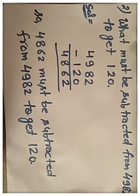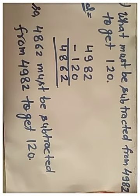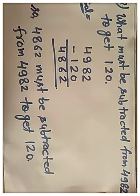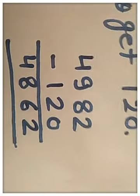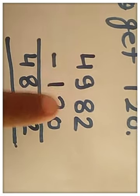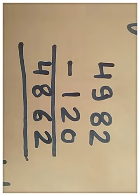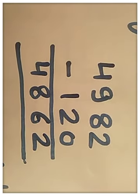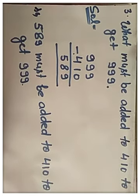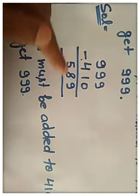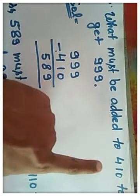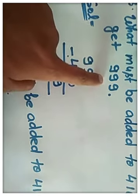Previous question was what must be subtracted from 4,982 to get 120. Then we subtract 120 from 4,982 and answer is 4,862. And in this question, when we add 589 to 410 then we will get 999.